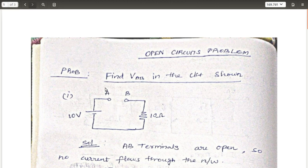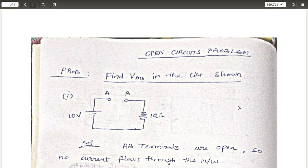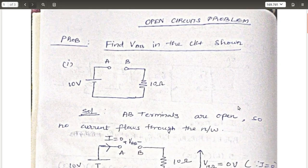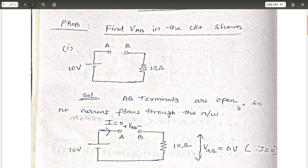We can see VAB in the circuit. We have two terminals. We can see the voltage. Open-circuit is the way we can see the open-circuit — we can refer to the previous video to make it easy to understand the problem.